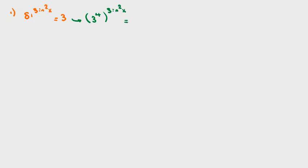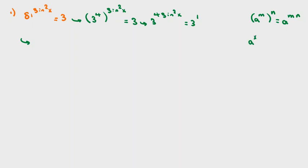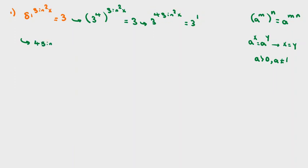Case 1: 81 to the power of sine squared x equals 3. Since 81 equals 3 to the 4th power, we get 3 to the power of 4 sine squared x equals 3 to the power of 1. By the power rule, a to the mn equals (a to the m) to the n. Since the bases are equal and a is positive and not 1, the powers must be equal: 4 sine squared x equals 1. Dividing by 4, sine squared x equals 1 over 4, so sine x equals plus or minus 1 over 2.